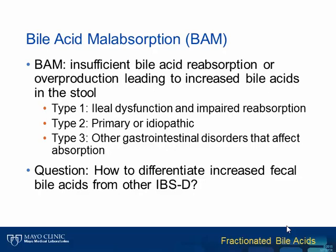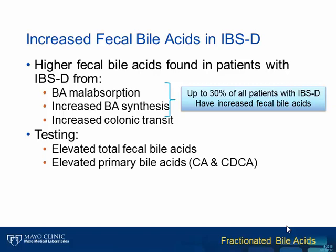How can a physician differentiate cases of increased fecal bile acids from other causes of IBS diarrhea? High fecal bile acids can be found in patients with IBS diarrhea from several causes, including bile acid malabsorption, increased bile acid synthesis, and increased colonic transit. It is estimated that up to 30% of all patients with IBS diarrhea have increased bile acids in their stool. The testing offers two results: the total amount of fecal bile acids, with all five most abundant fecal bile acids measured separately and added together, and the percentage of primary bile acids — cholic acid and chenodeoxycholic acid — as a percent of total fecal bile acids.